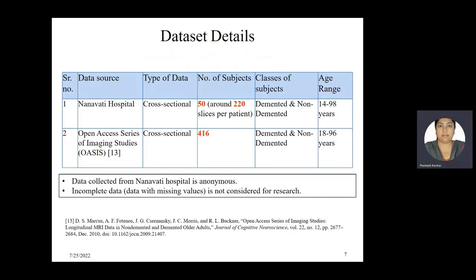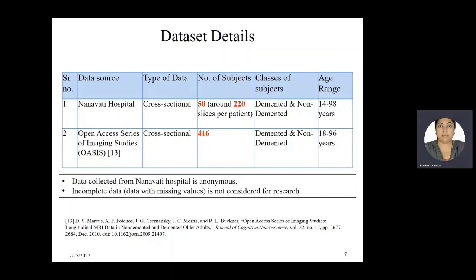The datasets considered for research are discussed. One source of data is Nanavati Hospital and the other is the OSS dataset, which is a publicly available dataset that can be used for research purposes. The type of data is cross-sectional, meaning each patient is scanned only once. Classes of subjects are demented and non-demented, and the age range is from 14 to 98 years. Data with missing values is not considered for research.